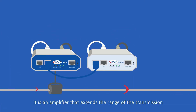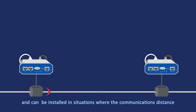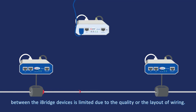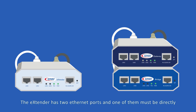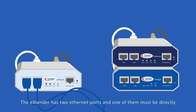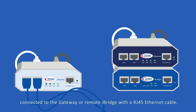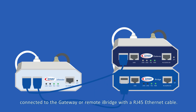The extender is an amplifier that extends the range of the transmission and can be installed in situations where the communications distance between the iBridge devices is limited due to the quality or the layout of wiring. The extender has two Ethernet ports, and one of them must be directly connected to the gateway or remote iBridge with an RJ45 Ethernet cable.